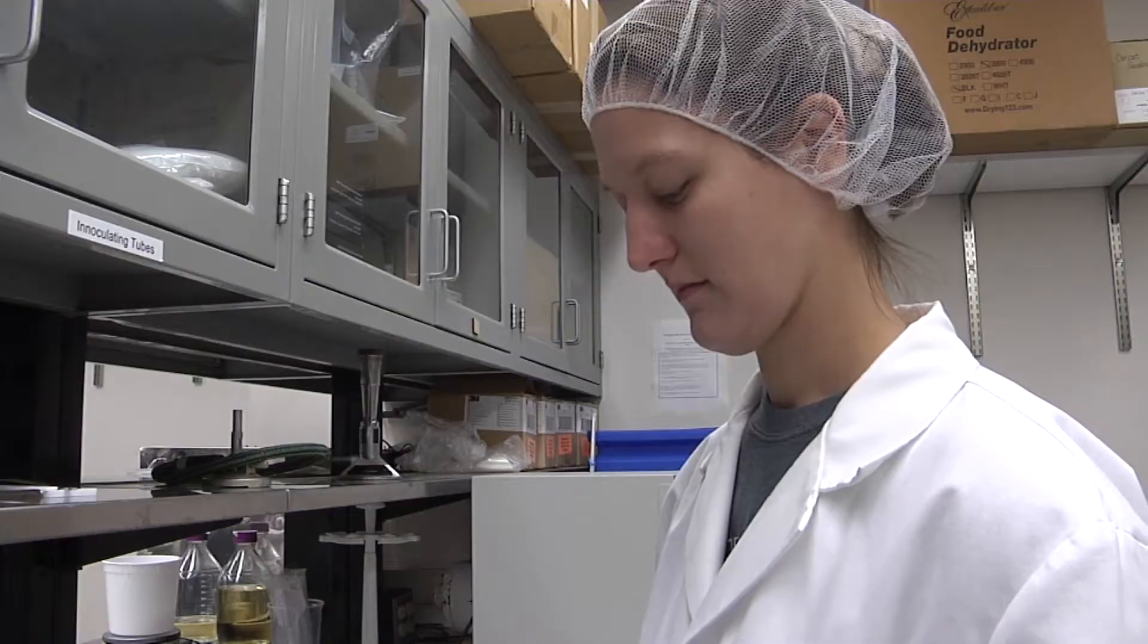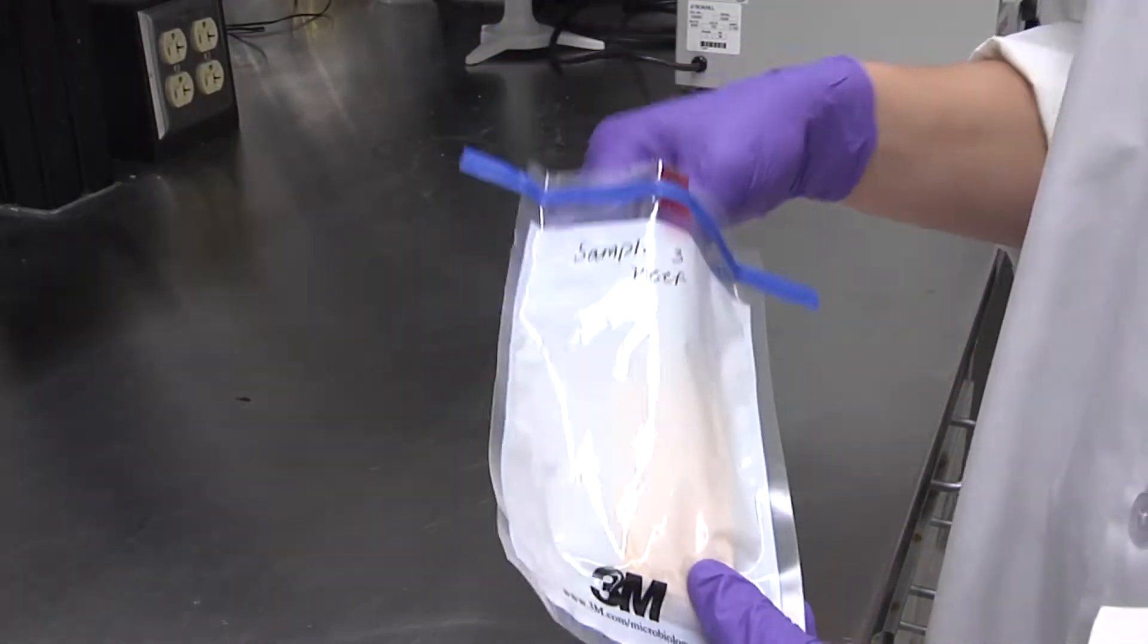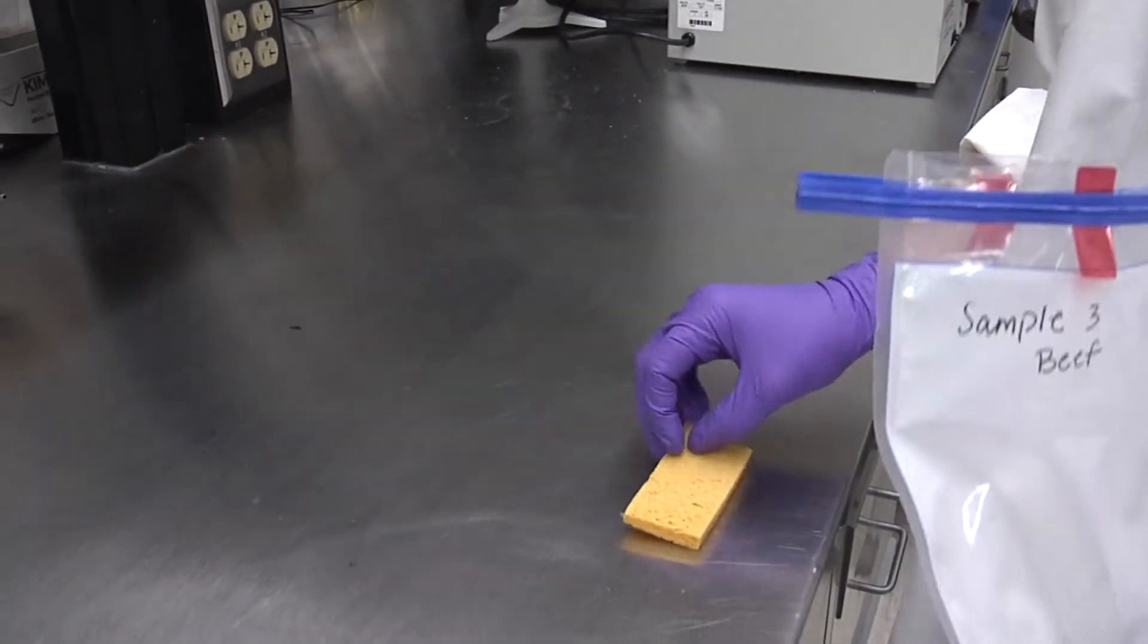Place the sterile gloves on your hands, open the bag with the moistened sponge, and then remove the sponge from the bag.